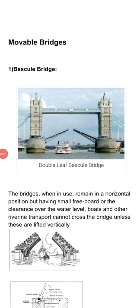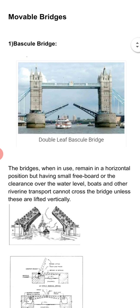Namaskar. We will see the movable bridges. There are five types of movable bridges: swing bridge, bascule bridge, traversal bridge, transporter bridge, and lift bridge. The first is the bascule bridge. You know this London Bridge?